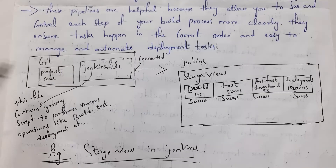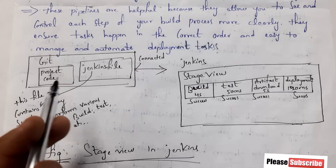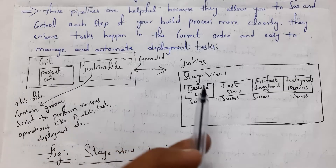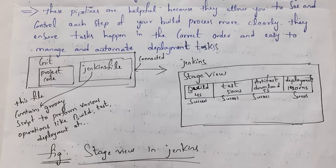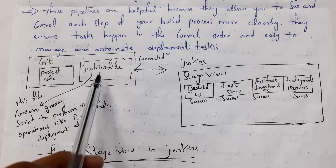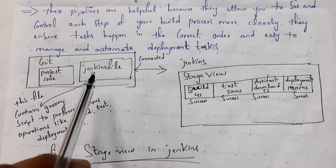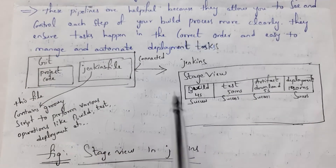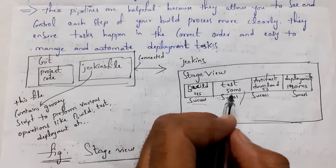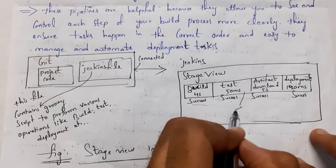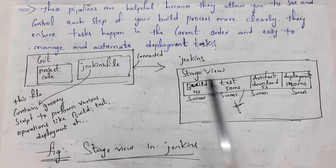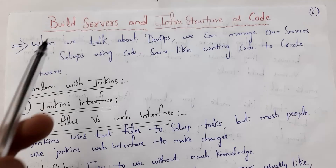Whenever any developer creates a project, he will place that project in GitHub. Along with this project, he will create one Jenkinsfile, and this Jenkinsfile is written using Groovy script. The script contains four stages: one is build stage, next is test stage, third stage is downloading the artifact, and stage four is placing that artifact in the server. I connect GitHub with the Jenkins server, so immediately whenever I place a project, automatically Jenkins will perform these four operations. You can clearly see each stage, whether it is successful or not. If testing is unsuccessful, it will automatically stop there. So if all stages are successful, then the build process is successful.